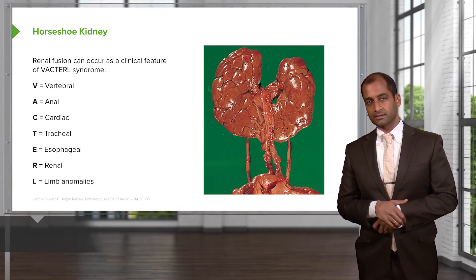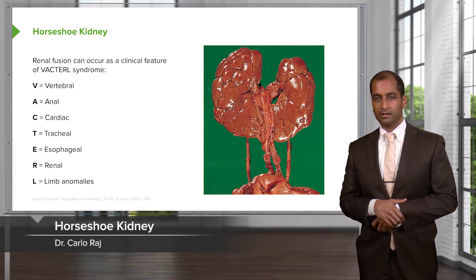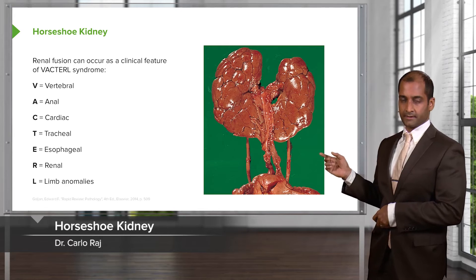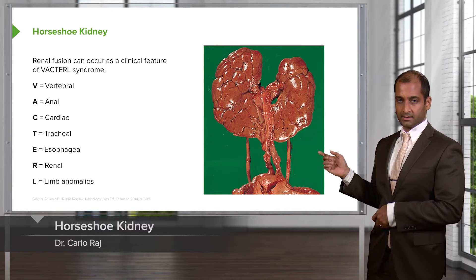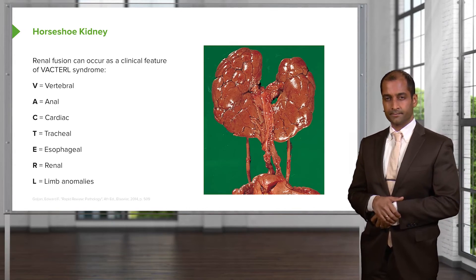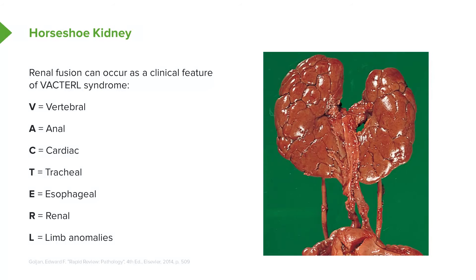Take a look at this — this is a horseshoe kidney. You see that in the middle? That's a horseshoe. What happened? The inferior poles got fused. What do you think it got trapped under? The inferior mesenteric artery. How often does this occur? Quite often. I'd like for you to put this into context as to what this could be part of in terms of a syndrome.